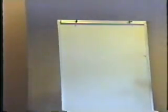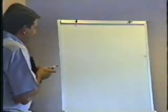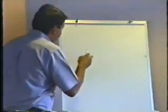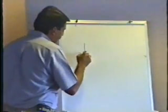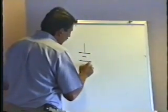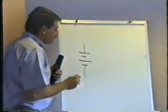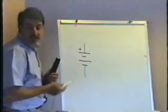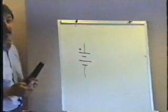The schematic symbols are supposed to kind of represent what the part is or what it does. The schematic symbol for a battery looks like this: long line, short line, long line, short line like this. And the long line is the positive side of the battery.